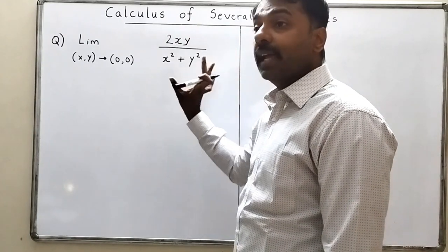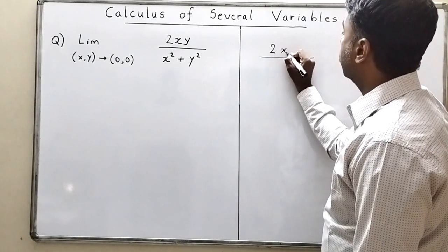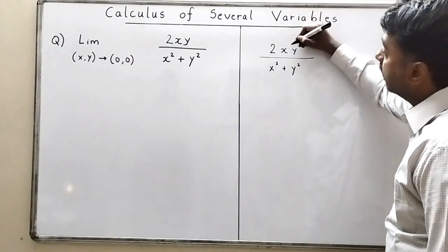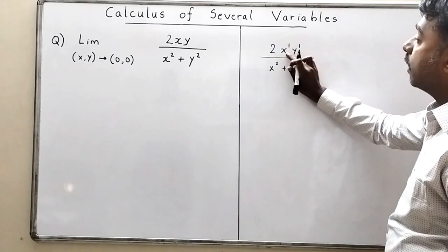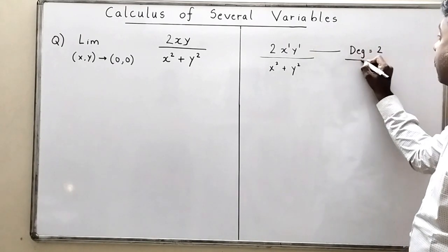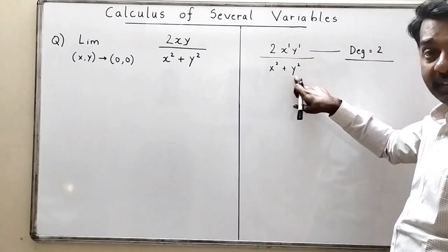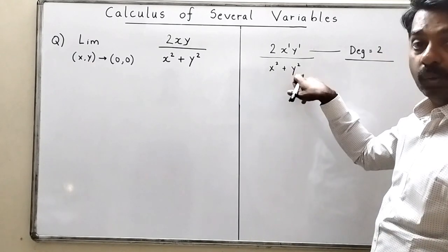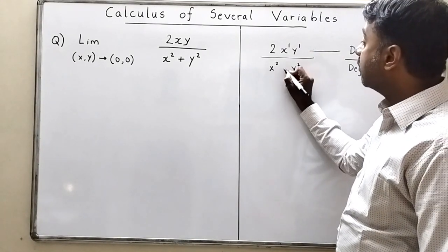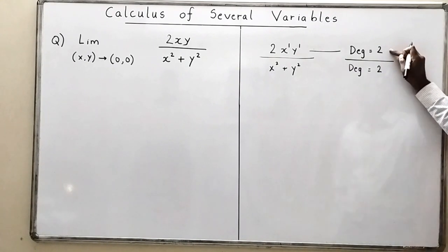Look at this function: 2xy upon x² + y². The degree of x is 1 and the degree of y is also 1, so when multiplied together the degree of the numerator is 2. In the denominator, x² has degree 2 and y² also has degree 2. Adding them gives degree 2 — not degree 4, which would happen if we multiplied them. So the denominator also has degree 2.